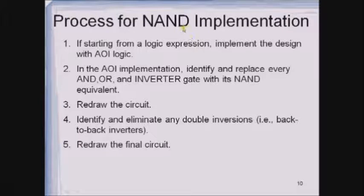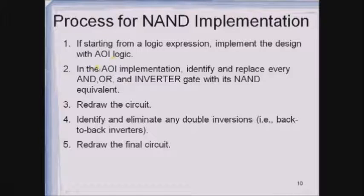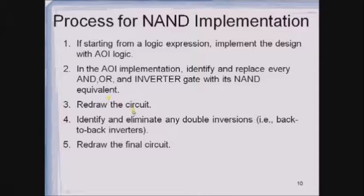Now, the process for NAND implementation — how to implement any boolean expression only with the help of NAND gates. First, starting from a logic expression, implement the design with AOI logic using AND, OR, and inverter. Then, in the AOI implementation, identify and replace every AND, OR, and inverter gate with its NAND equivalent. Redraw the circuit. Identify and eliminate any double inversions — if you have two bubbles consecutively, it is equivalent to a straight line, so just eliminate all the double inversions. Then redraw the final circuit.